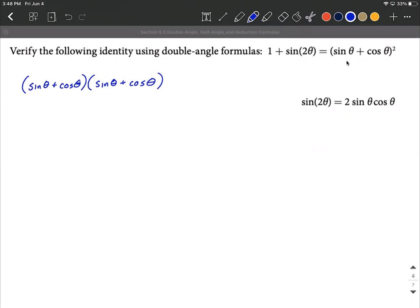Next, I'm actually just going to distribute or multiply this out, foil if you will. So we're going to get sine squared of theta first, outer, inner, and then last.